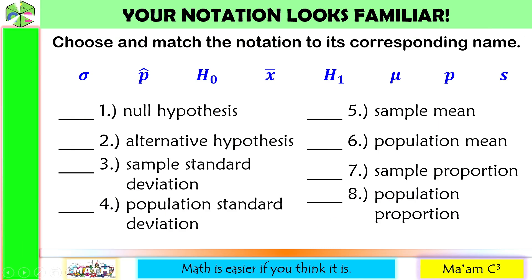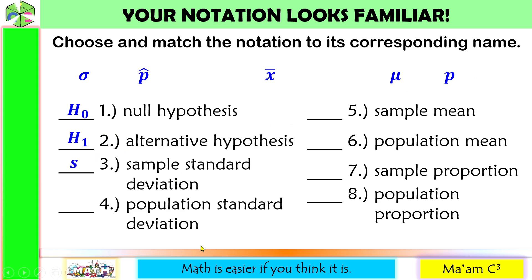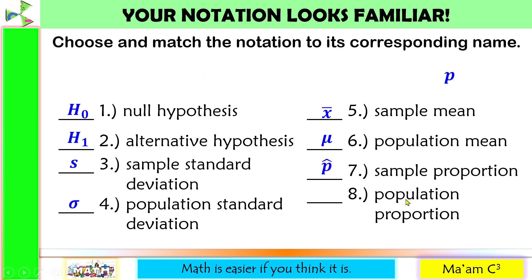Choose and match the notation to its corresponding name. Null hypothesis is denoted by H sub 0, while alternative hypothesis is denoted by H sub 1. Sample standard deviation is denoted by a small letter S. Population standard deviation is denoted by sigma. Sample mean is denoted by X bar. Population mean is denoted by mu. The symbol for sample proportion is p-hat, and for population proportion, we have the small letter P.